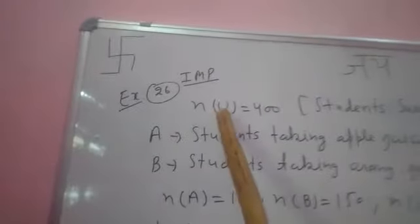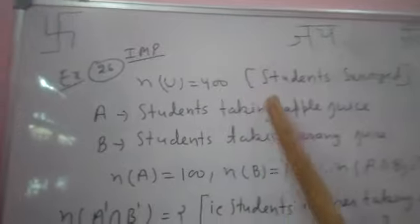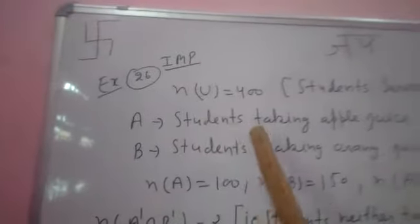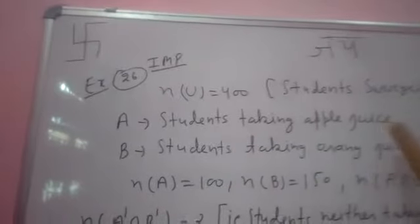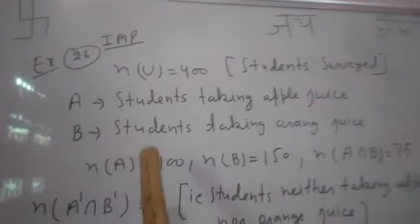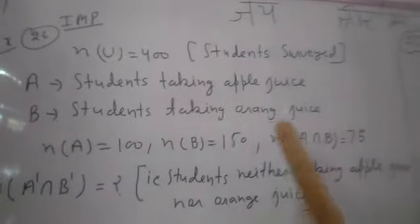We suppose that the universal set is 400 in which some students are surveyed. When students are surveyed, some students are taking apple juice. A is the set of students who take apple juice and B is the set of students taking orange juice.